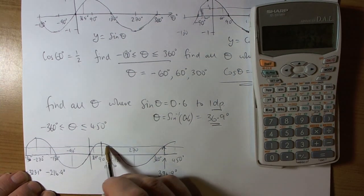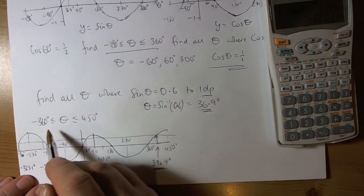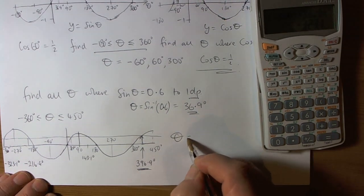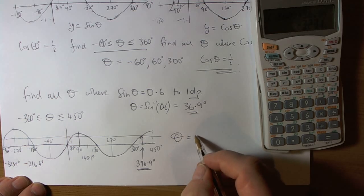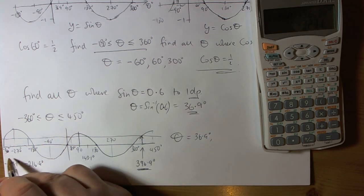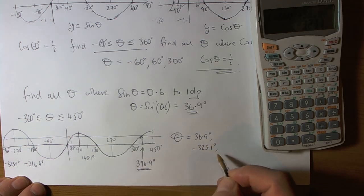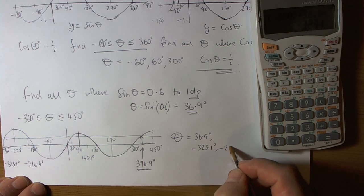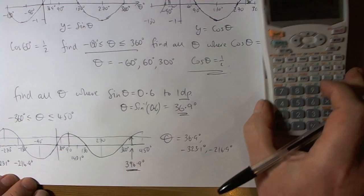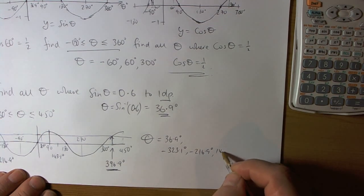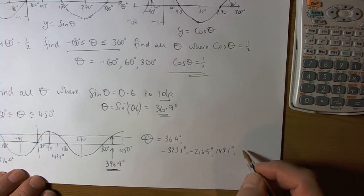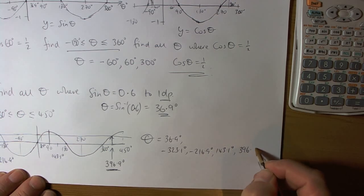So using symmetry properties has allowed us to find all the answers in the domain 360. So I'm suggesting that theta then will be 36.9 we found, coming from this side it also includes negative 323.1 degrees, negative 216.9 degrees, 143.1 degrees and 396.9 degrees.